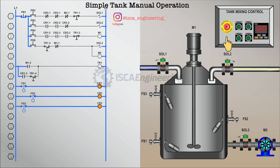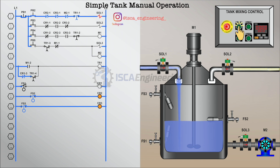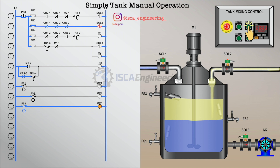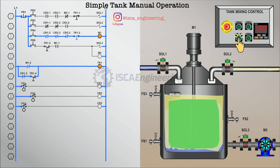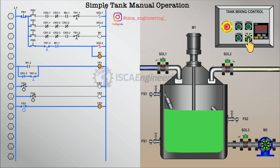Shown is an example of a manual tank operation and the control circuit used. When the tank is at the empty level, pressing and holding PB2 will energize solenoid 1 and begin filling the tank with mixture A. Solenoid 1 will stay open until float switch 2 is actuated. When the tank is filled with mixture A, holding PB3 energizes solenoid 2 and begins filling the tank with mixture B until float switch 3 is actuated. When the tank is filled with both mixtures, PB4 is pressed and held to energize the agitator motor and start the mixing sequence for 12 seconds. After the mixing sequence is complete, pressing and holding PB5 will open solenoid 3 and start the pump in order to drain the tank. The operation can be restarted once CR1 is energized.